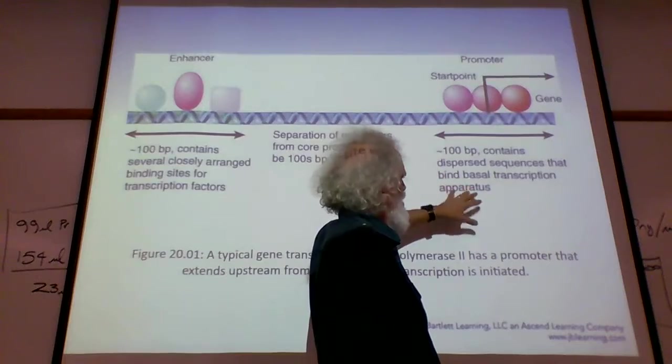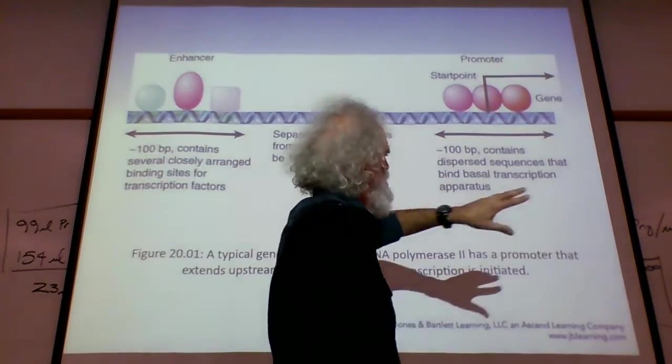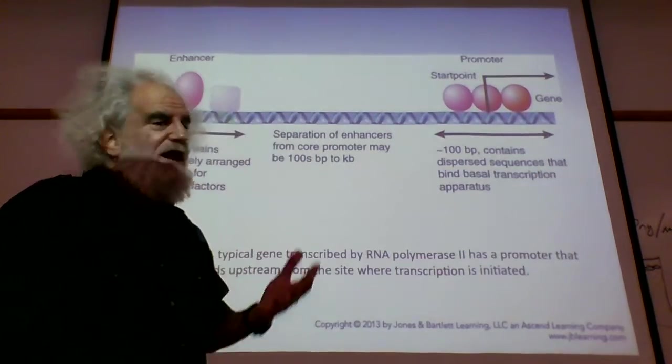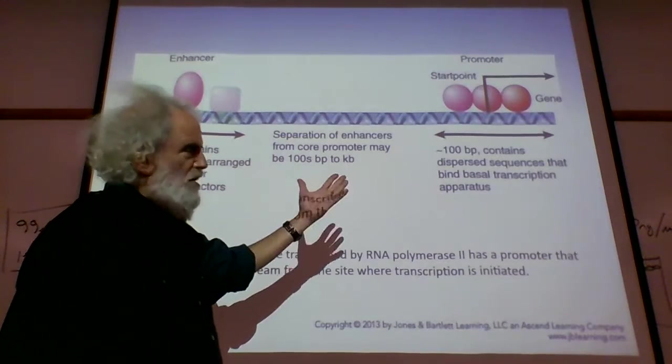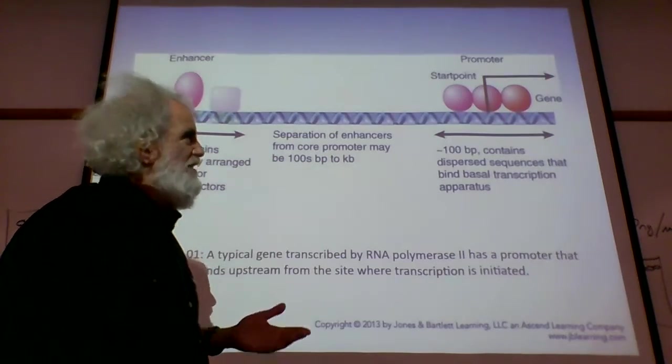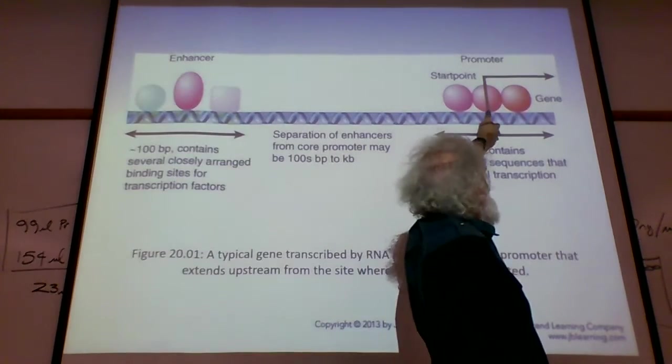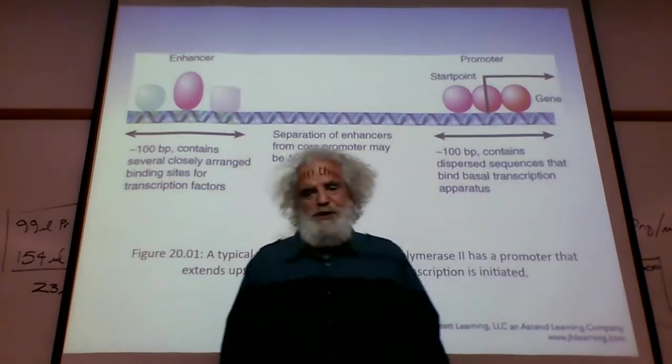Then we have a separation, and this separation can be thousands of nucleotides between the enhancer and the core promoter. At the core promoter, it's around 100 base pairs, and there are a set of sequences that are quite conserved. This is what binds what we call the basal transcription apparatus, and then it establishes plus one where the RNA polymerase is going to start transcribing.